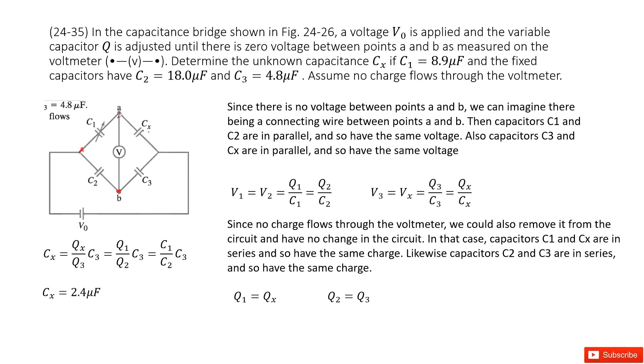Because you can see at point A, it just splits from this point. And it also tells us no charge flows through the voltmeter. So that makes point A and point B the potential equals. So we can see the potential V1 equal to V2.